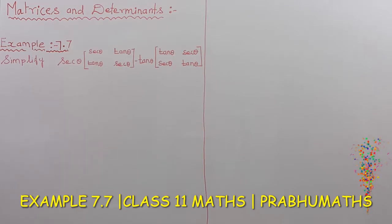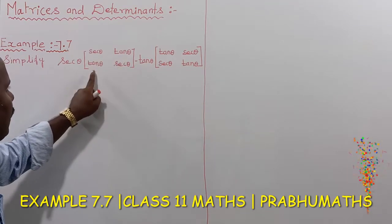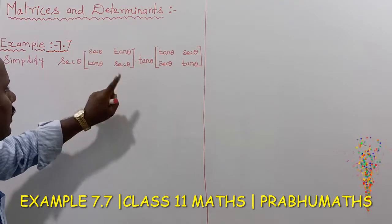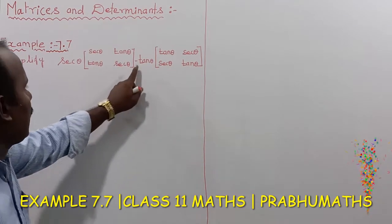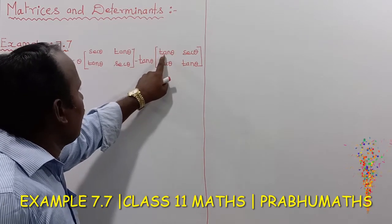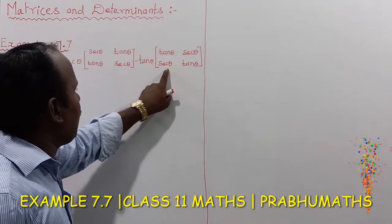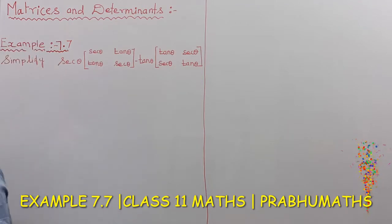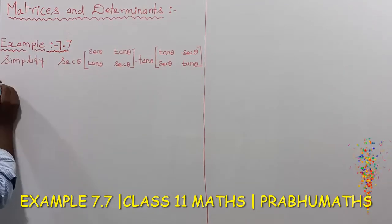Example 7.7: Simplify the matrix expression — the first matrix is [[sec θ, tan θ], [tan θ, sec θ]] minus the second matrix [[tan θ, sec θ], [sec θ, tan θ]]. That is the given question — just simplify and find the answer.